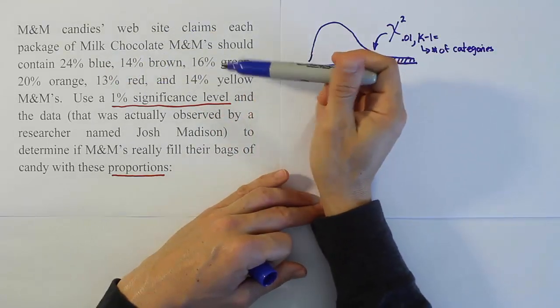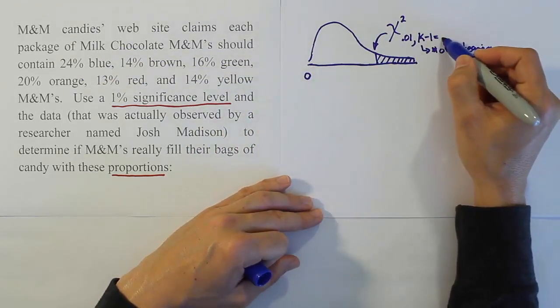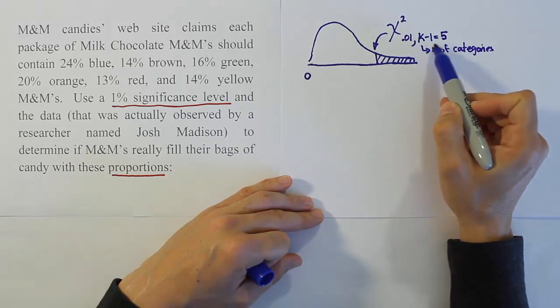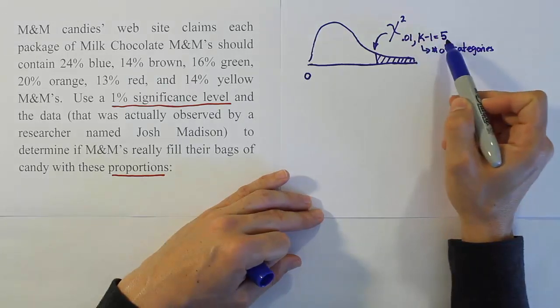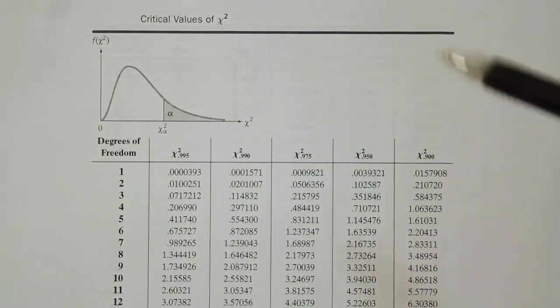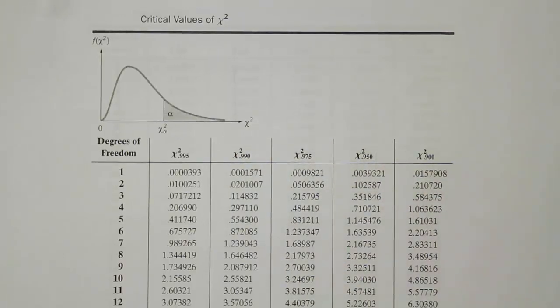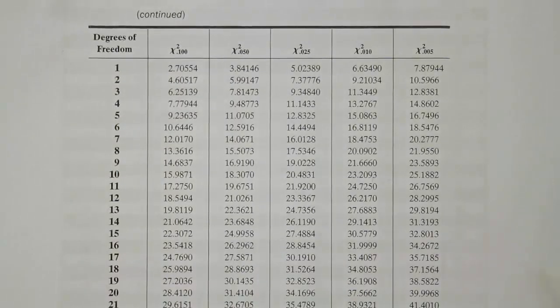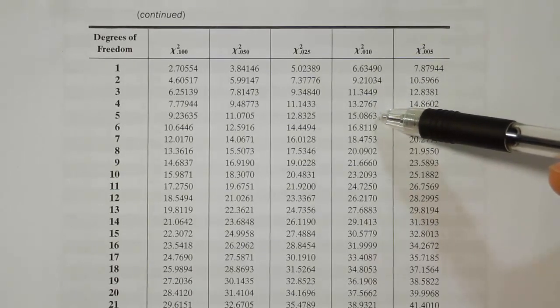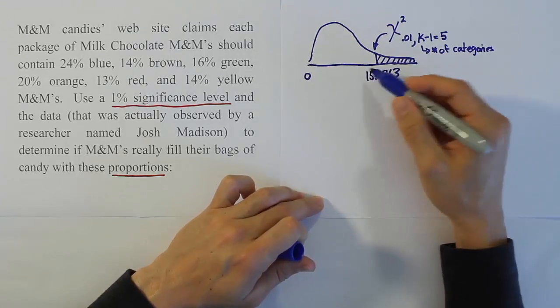How many categories did our problem have? We had blue, brown, green, orange, red, and yellow - that's 1, 2, 3, 4, 5, 6 different categories. Take away 1 and we have 5 degrees of freedom. Going to the chi-squared table at 0.01 with 5 degrees of freedom, we find 15.0863. That's our critical value.